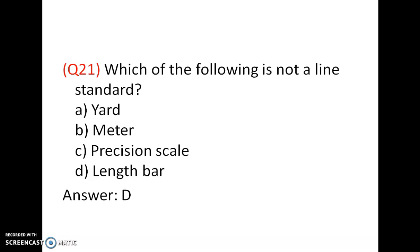Next question: Which of the following is not a line standard? There are three types of standards: line standard, end standard, and wavelength standard. Meter, yard, and precision scale are line standards. But length bar is not a line standard — length bar and slip gauges are used as end standards.